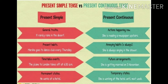Here are examples contrasting the two tenses: simple present is used with general truths, present habits, timetable events, and permanent states. Present continuous is used with actions happening now, annoying habits (with 'always'), future arrangements, and temporary states. You can read the examples in your book.